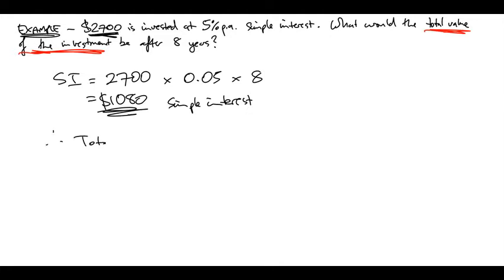...is going to be what they started off with, plus the interest they earned. In the calculator it goes, and that's going to be 3,780. So that's what this person is going to end up with at the end. They put 2,700 away or gave it to someone for 8 years, and that person was obliged to pay back 5% of that every year for those 8 years. So when he gets the principal back and the interest, he'll end up with 3,780 at the end.